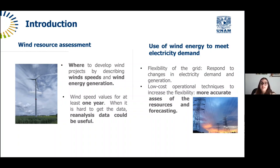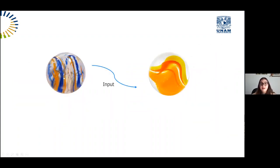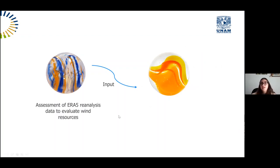There are high-cost techniques to address variability, like energy storage, and also low-cost techniques such as more accurate resource assessment, forecasting, and coordinating with neighboring connected grids. These last techniques are the ones we studied, related to wind resource assessment — describing the wind and selecting the best sites to interconnect. This part of the project divides into two spheres, each with its own objectives, where the first sphere is the input to the second. The first sphere is the assessment of ERA5 reanalysis data to evaluate wind resources.